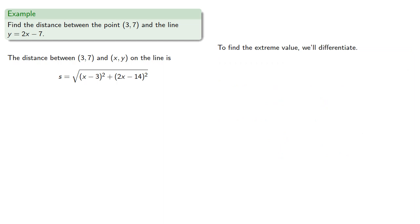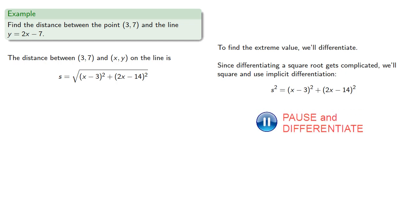To find the extreme values, we'll differentiate. Since differentiating a square root gets complicated, we'll square and use implicit differentiation. So s squared equals... differentiating and solving.